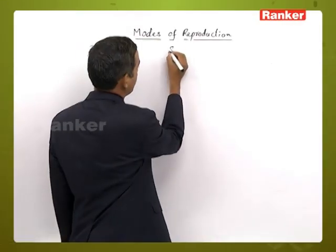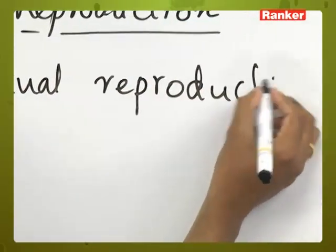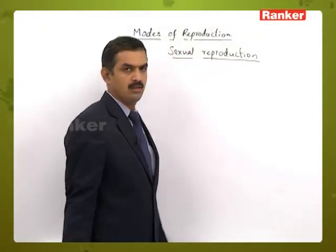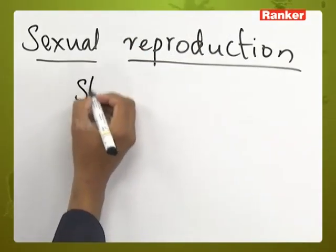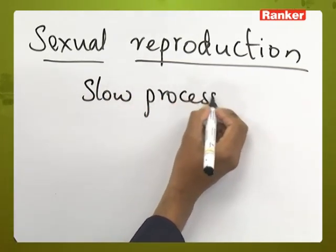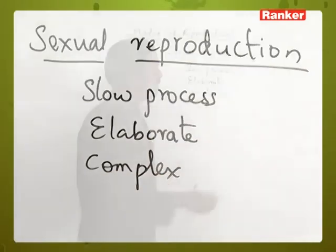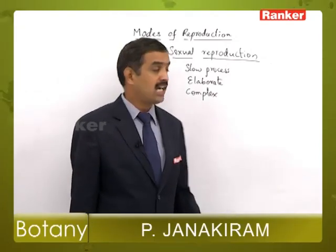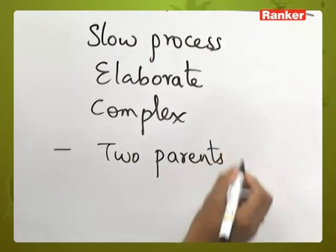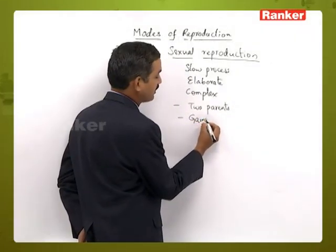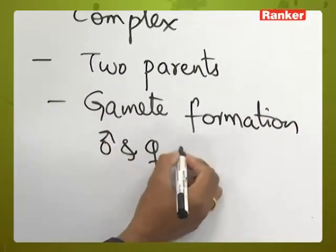In the modes of reproduction, the next one is sexual reproduction. Sexual reproduction is considered to be the advanced one, which is a slow, elaborate, and more complex process when compared to the vegetative and asexual methods. Generally two parents are required for this process, gamete formation is present, and two types of gametes are formed — male gametes and female gametes.